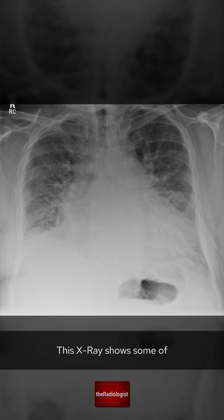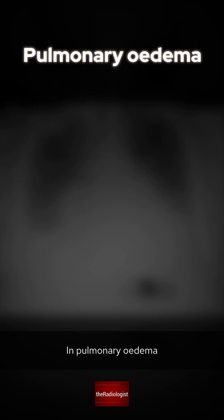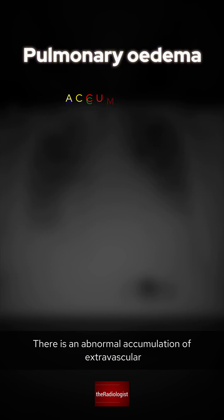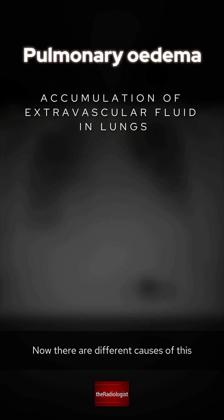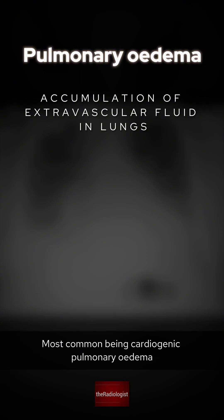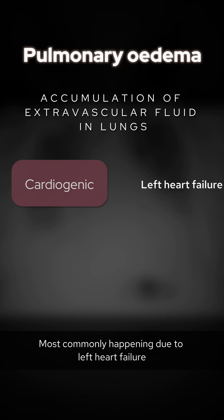This x-ray shows some of the classic features of pulmonary edema. In pulmonary edema, there is an abnormal accumulation of extravascular fluid within the lungs. There are different causes of this, the most common being cardiogenic pulmonary edema, most commonly happening due to left heart failure.